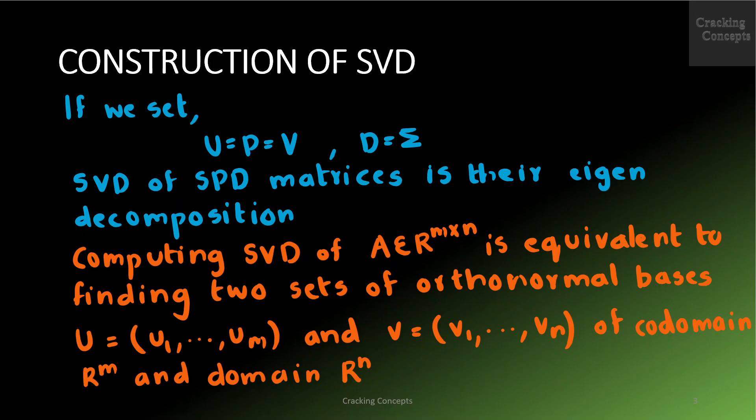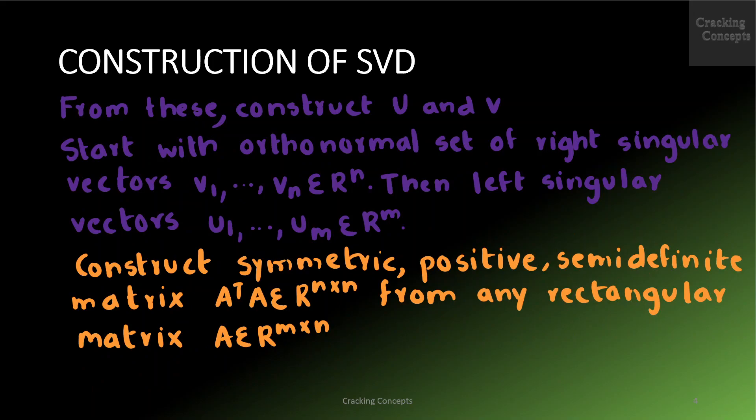Computing the SVD of a matrix A belonging to M×N dimension space is equivalent to finding two sets of orthonormal bases: U consisting of U1 to UM, and V consisting of V1 to VN, of the co-domain R^M and the domain R^N respectively. From these ordered bases we will construct the matrices U and V. We will start with constructing the orthonormal set of right singular vectors V1 to VN belonging to R^N.